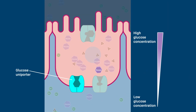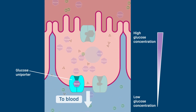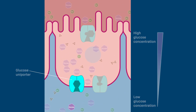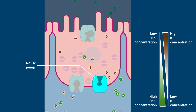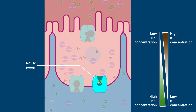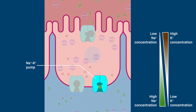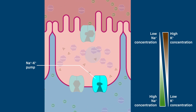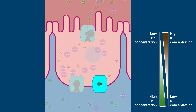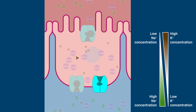Once in the cell, glucose passes out of the cell down its concentration gradient by passive movement through a glucose uniporter. The sodium gradient driving the glucose symport is maintained by the sodium-potassium pump, which keeps the internal concentration of sodium low and the external concentration high. The sodium-potassium pump hydrolyzes ATP to release the energy necessary to push sodium and potassium ions against their concentration gradients.